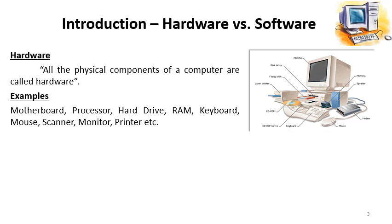In this image we can see a computer with all its hardware components, like keyboard, mouse, modem, speakers, memory, system unit, hard drive, floppy drive, printer, CD-ROM, and monitor. All these are hardware components of the computer system.